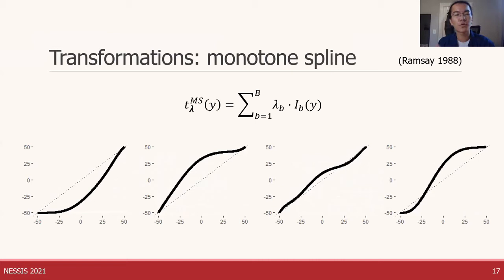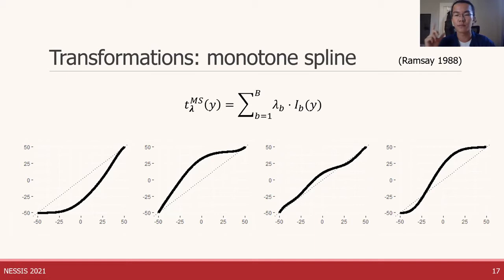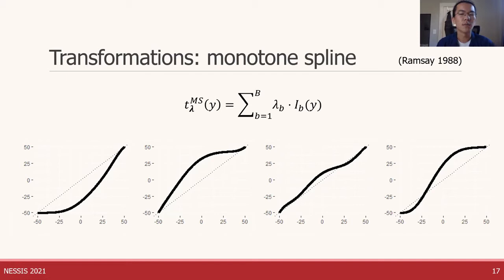More generally, the only constraint we need on our transformations is that they be monotone — transforming the data should never change the ordering of the scores, only their relative spacing. To give ourselves more flexibility, the second class of transformations we consider is monotone spline transformations, first introduced by Ramsey in 1988. Monotone splines are regression splines built from an I-spline basis, easily parameterized by a lambda vector of length B, where B is the number of basis functions depending on the degree and number of knots. Crucially, if we constrain all lambda values to be positive, the resulting transformation will always be monotone increasing. Monotone splines can take on basically any monotone function shape.